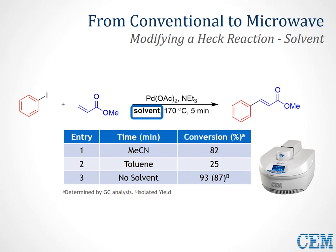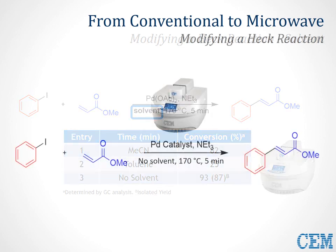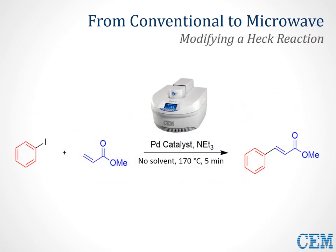Acetonitrile is a moderate microwave-absorbing solvent and had already proved effective for this transformation. Trying a nonpolar solvent like toluene resulted in a dramatic decrease in reaction conversion — about 25% compared to 82%. However, performing the reaction neat showed a significant increase in product conversion to 93% while maintaining minimal byproduct production. Upon purification, the product alkene was isolated in an 87% yield. With some minimal optimization, we were able to convert this 20-hour reaction to a five-minute neat method in the Discover SP microwave system. The lack of solvent and low energy requirement makes this a perfect example of applying green chemistry principles to a common reaction.